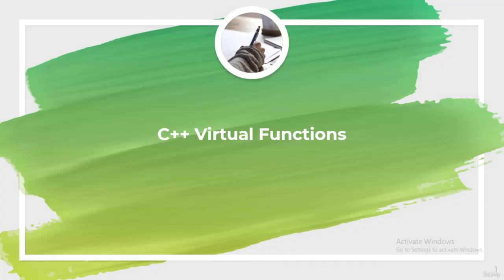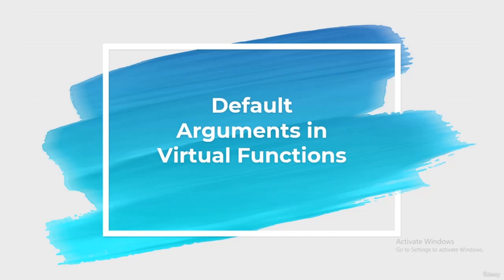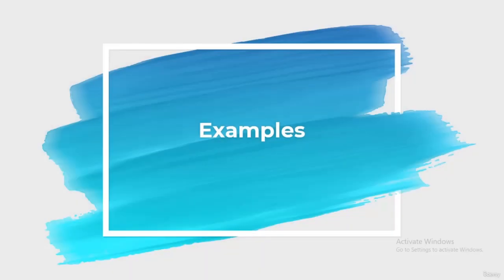Hey guys, this is Omar Khan, welcome to another tutorial on virtual functions. In this tutorial you will see how default values work for virtual functions. Default arguments do not participate in the signature of a function, so signatures in base class and derived classes are considered the same — hence the base class function is overridden. Default value is used at compile time, so when the compiler sees that an argument is missing in a function call, it substitutes the default value given.